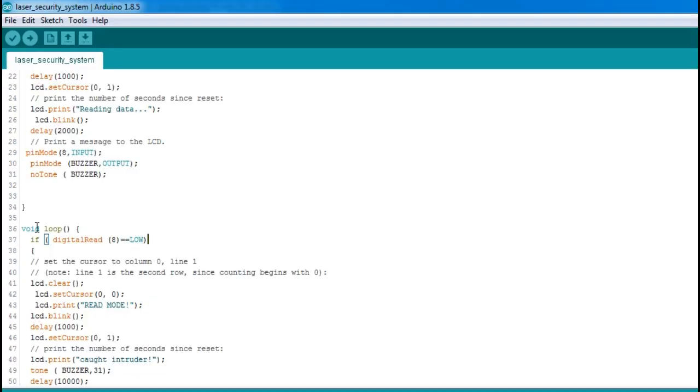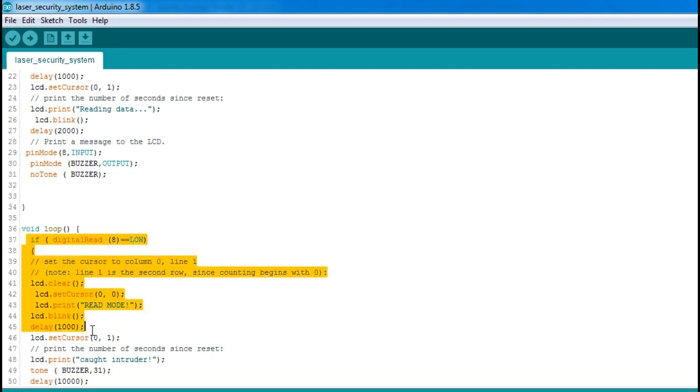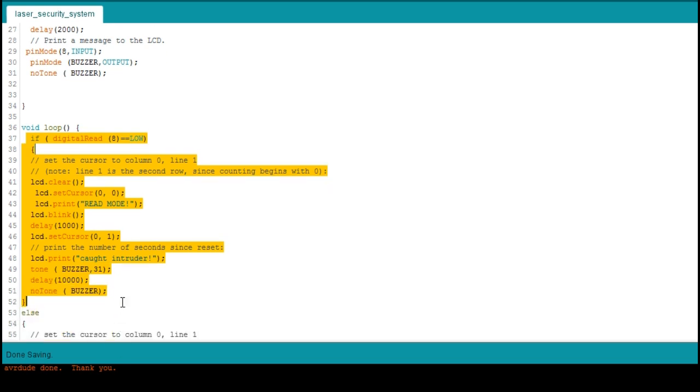For the loop function, I use an if statement to monitor pin 8 whenever the data pin of the 555 timer is triggered. The signal on the pin will go low whenever an intruder cuts the laser light. The LCD will display this information as the microcontroller will trigger an alarm which will stay up for 10 seconds.